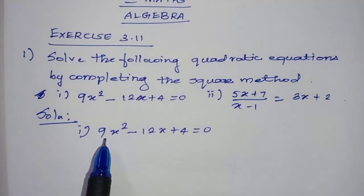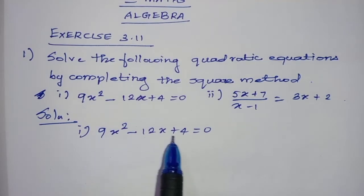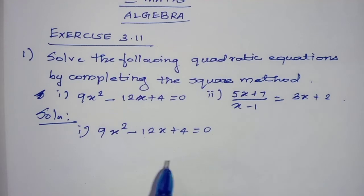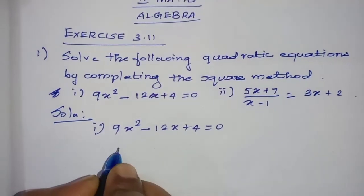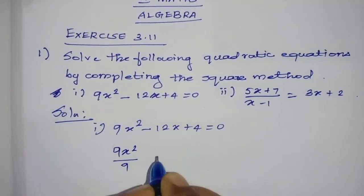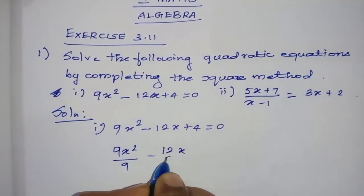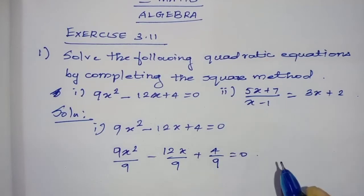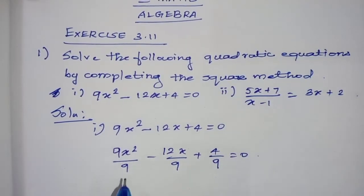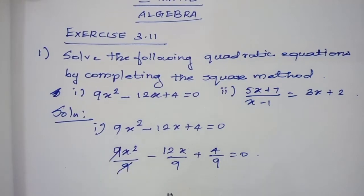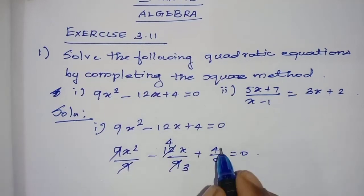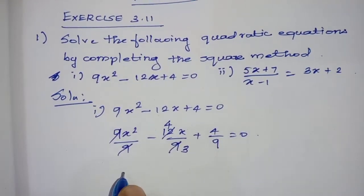First step: divide both sides of the equation by the coefficient of x². The coefficient of x² is 9, so divide the whole equation by 9. So we get 9x² by 9 minus 12x by 9 plus 4 by 9 equal to zero. The 9s cancel, and simplifying the 12/9 fraction gives us 4 by 9 equal to zero.